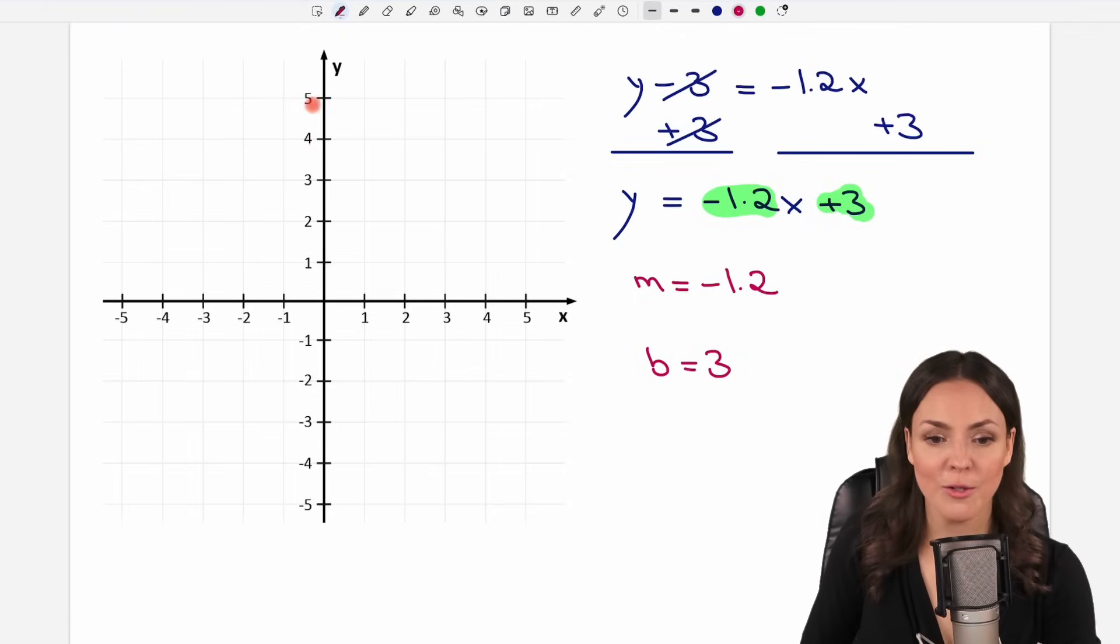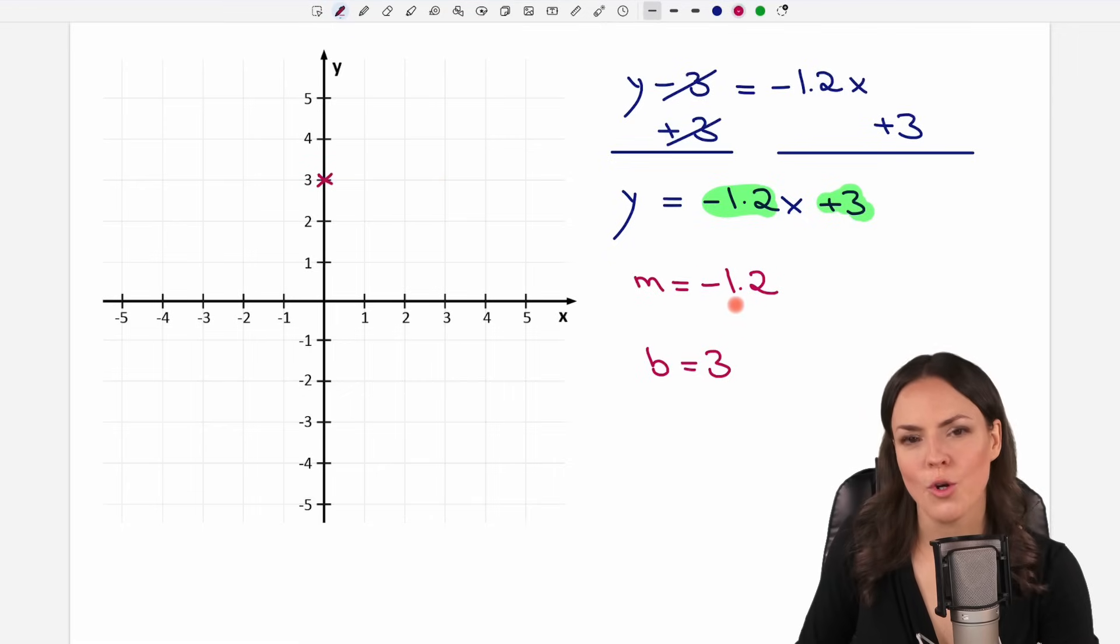We start with our b. So we go to our y-axis to the 3 and set our x here. And now we take a look at our slope. Well we would love to have this as a fraction, so let's convert this decimal number to a fraction by taking this number without the decimal point, so just the 12, and writing this in the numerator of our fraction. And then we have to divide by the place value of the last digit. So after the decimal point we have tenths, so we divide by 10. We could work with this fraction or we reduce it so that the numbers are a little bit smaller. Both numbers are divisible by 2. So if we divide 12 by 2 it equals 6, and if we would divide 10 by 2 it equals 5.